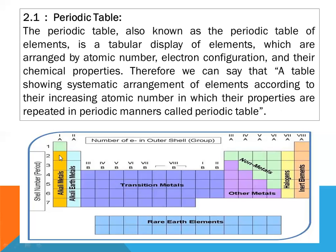The first element placed is hydrogen, then helium — the first shell is complete. Then the second shell starts: lithium, beryllium, boron, carbon, nitrogen, oxygen, fluorine, chlorine, and neon. The second shell is complete at eight elements, as the maximum capacity of the second shell is eight. Then the third shell begins, and so on.